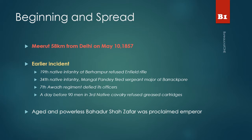The third one being the 7th Awadh Regiment defied its officers' orders to use the Enfield Rifle. The final incident happened a day before May 10th, 1857, in which 90 men of the 3rd Native Cavalry refused the greased cartridges used in the Enfield Rifle. Then these soldiers marched towards Delhi and proclaimed Bahadur Shah Zafar as their Emperor.